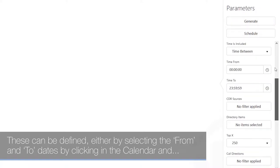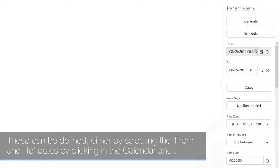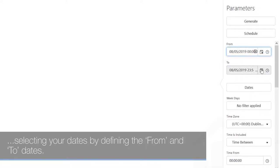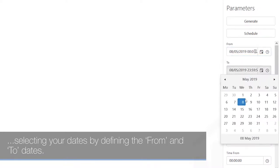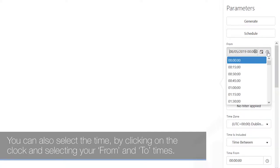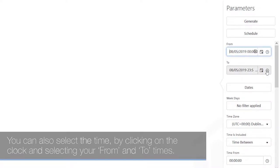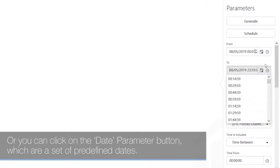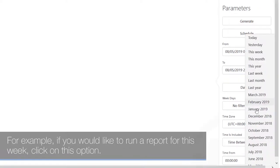To generate a report you must first select a date range. These can be defined by selecting the from and to dates by clicking in the calendar, or by defining the from and to times using the clock. Alternatively, you can click on the date parameter button, which provides a set of predefined dates — for example, click 'This Week' to run a report for the current week.